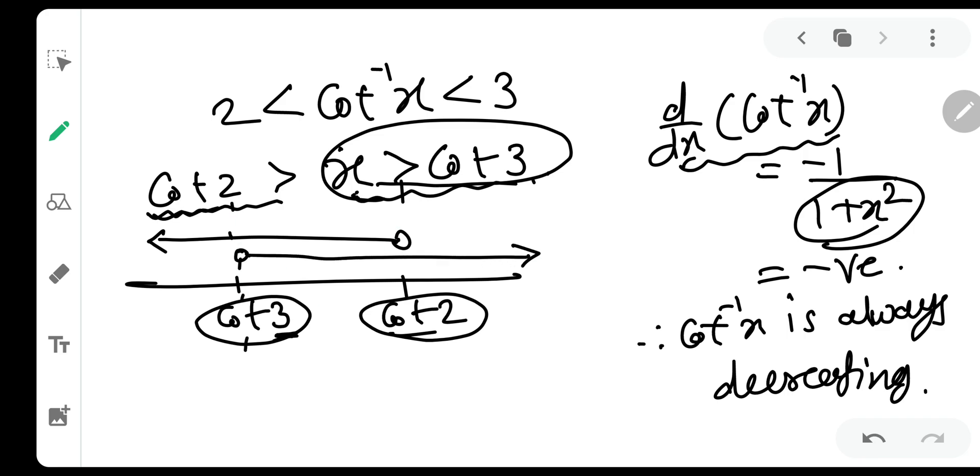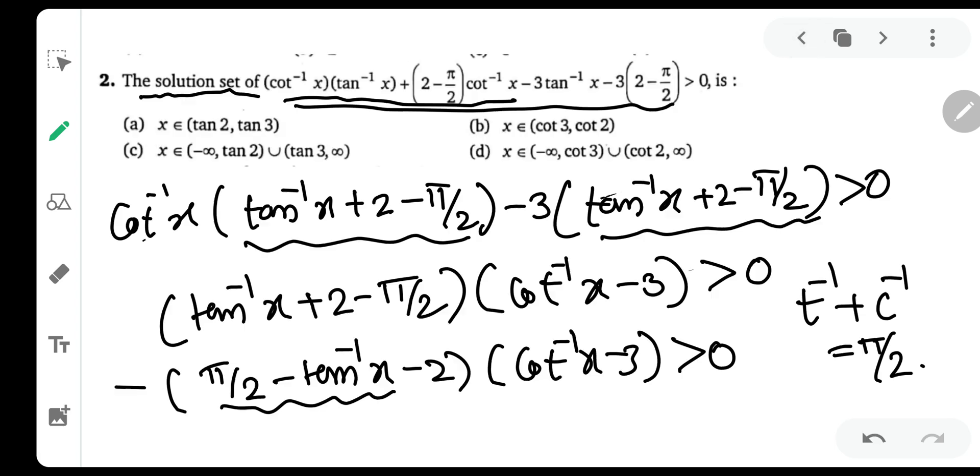Now, let us check out the intersection. Therefore, the intersection is cot 3 is less than cot 2. Hence, cot 3 is less than x is less than cot 2. Hence, the correct option is option number B.